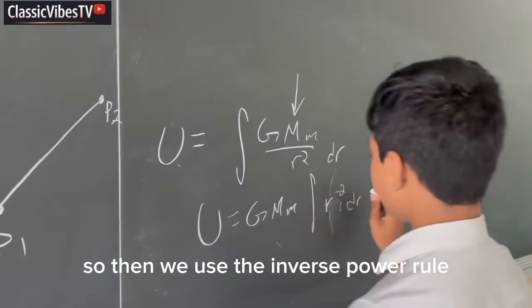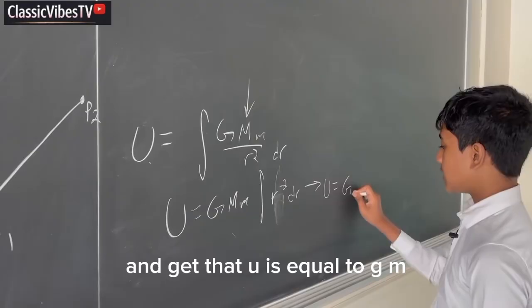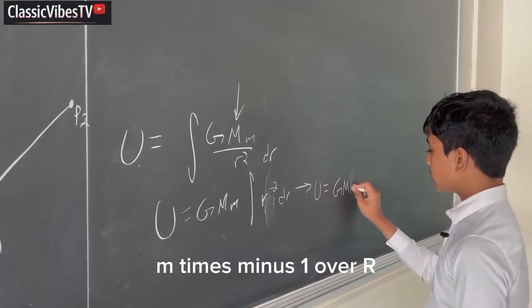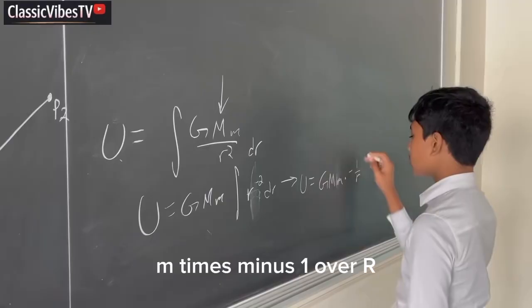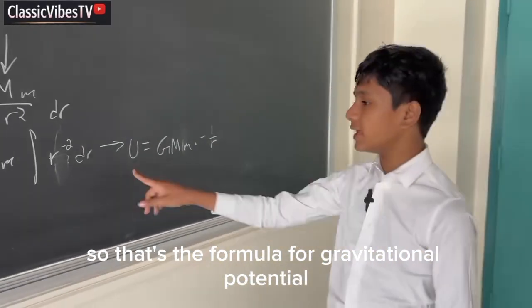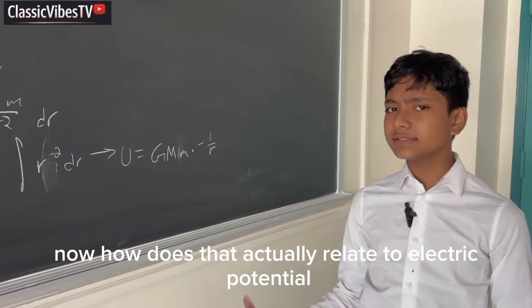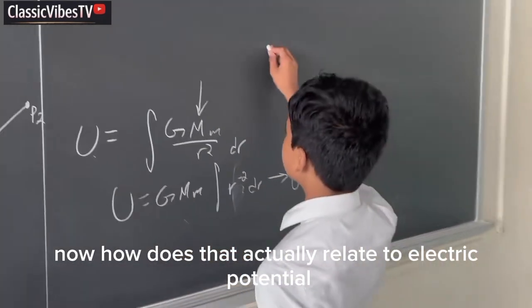So then we use the inverse power rule and get that u is equal to GMm times minus 1 over r. So that's the formula for gravitational potential. Now, how does that actually relate to electric potential?